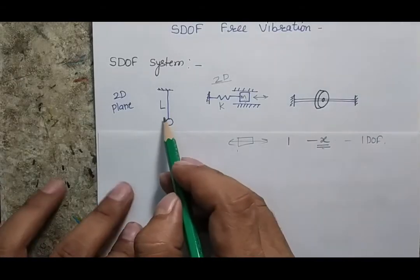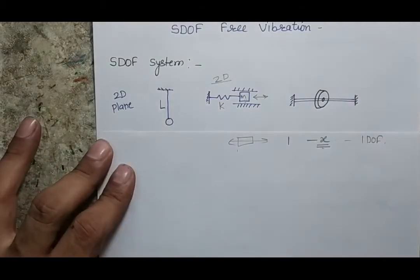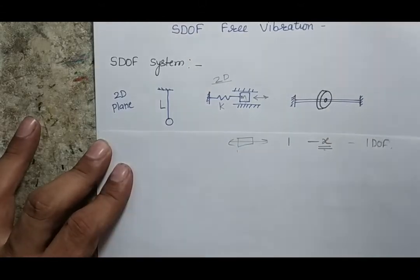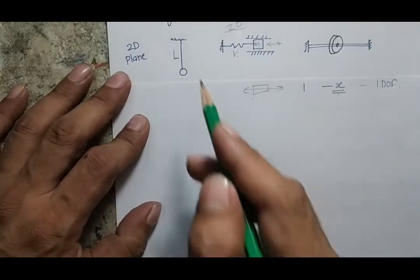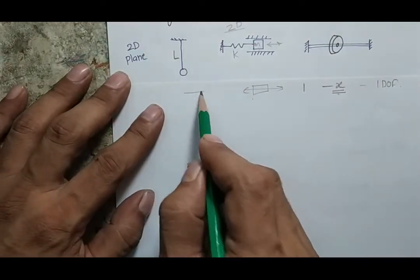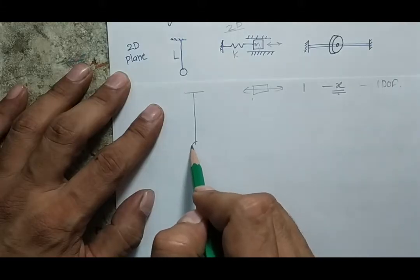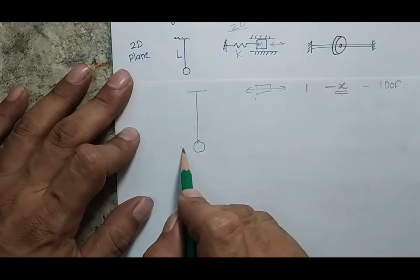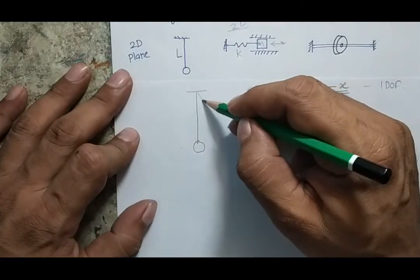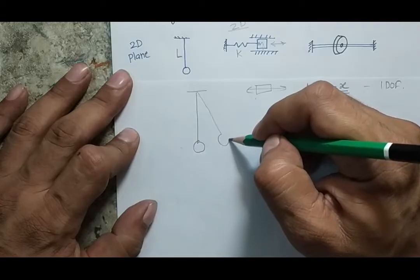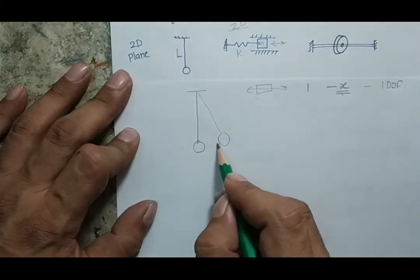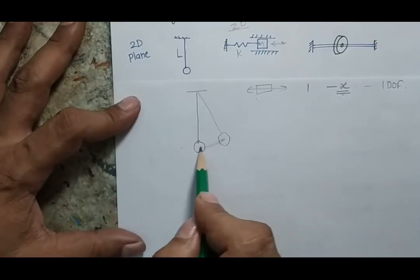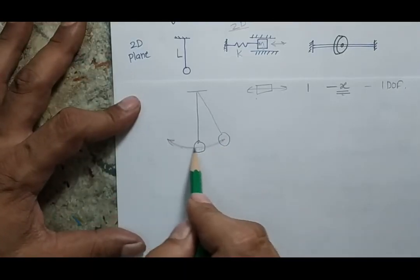Now let's look at the second case: a pendulum in two-dimensional space. I want to understand the degree of freedom of this system. I give certain initial displacement so that the pendulum reaches a displaced position, then I release it. When released, the pendulum exhibits an oscillatory motion.